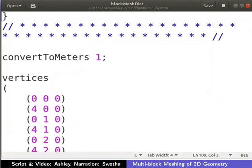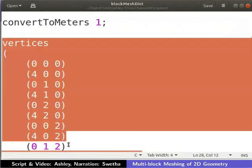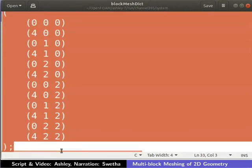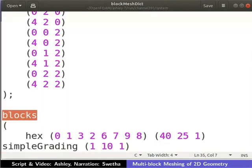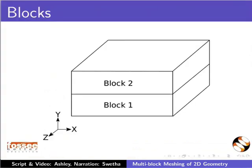Let us enter the coordinates of vertices in ascending order of their vertex number. The vertices are defined using the list vertices. The coordinates of the 12 vertices are entered as shown. Now, let us see how the blocks for this geometry are defined. The geometry is divided into two blocks. This division enables us to mesh the top and bottom sections of the geometry differently.